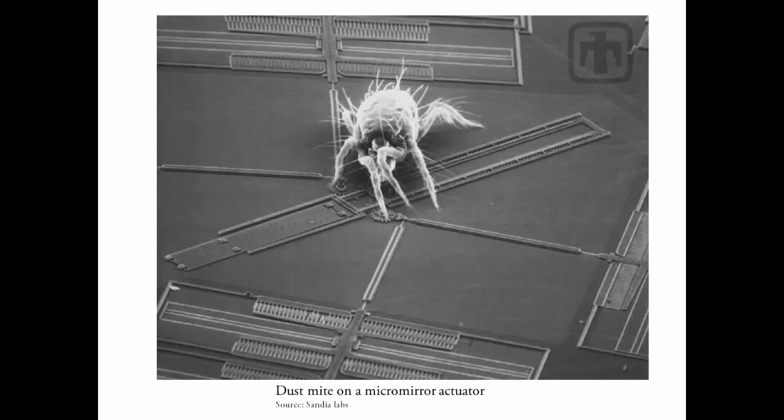This is a scanning electron microscope image of a micro mirror actuator developed by Sandia labs and that is a dust mite that's even smaller than the size of an ant's head. Notice the comb structures on the sides. These are capacitors just like those in an accelerometer but here a voltage is applied to generate a movement in order to rotate the gears.